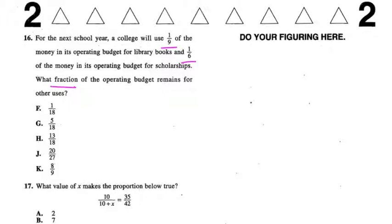What fraction of the operating budget remains for other uses? Whatever we get once we add one-ninth and one-sixth, we have to subtract that from the total, which at this point is just going to be one, because one is 100 percent.